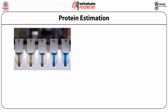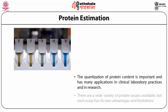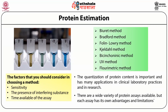We discuss protein estimation. Quantification of protein content is important and has many clinical applications. A wide variety of protein assays are available, but each has its own advantages and limitations. Before choosing a method, the most important factors to consider are sensitivity, the presence of interfering substances, and time availability. Many methods are available: Biuret method, Bradford method, Folin-Lowry method, Kjeldahl method, BCA method, UV-visible spectrophotometry, and fluorimetry. The development of color is directly proportional to the concentration of protein and is used to estimate protein concentration in an unknown sample.